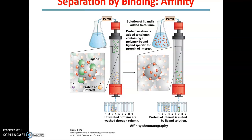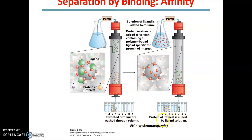Once proteins get to their substrate, they bind to it while others migrate or are eluted from the column. Here, a solution of ligand is added to the column. Once you add the ligand solution, the proteins that bind to their ligand will elute with the ligand. The protein mixture is added to the column containing polymer beads with a ligand specific for the protein of interest.